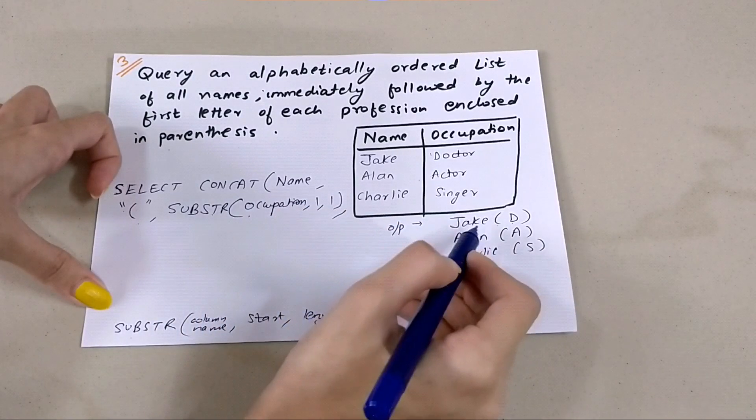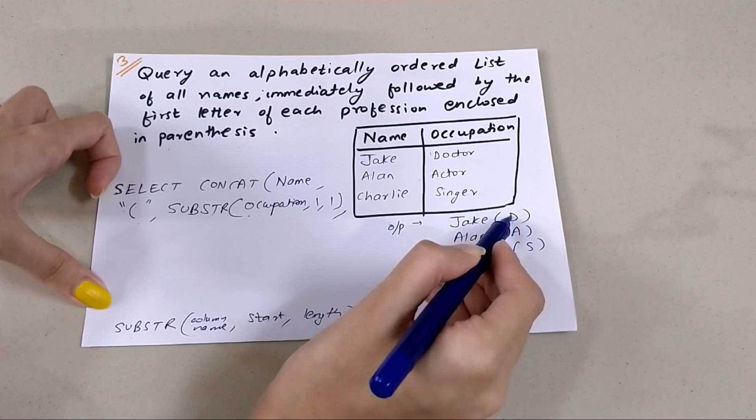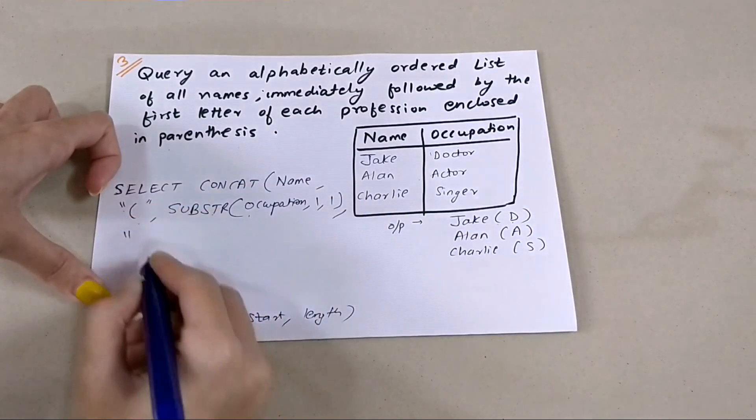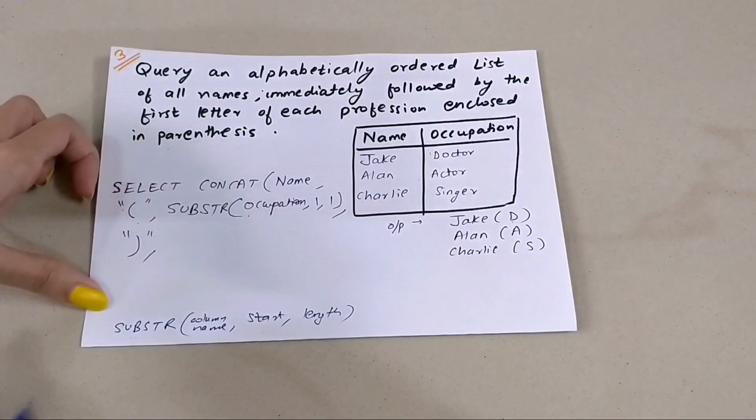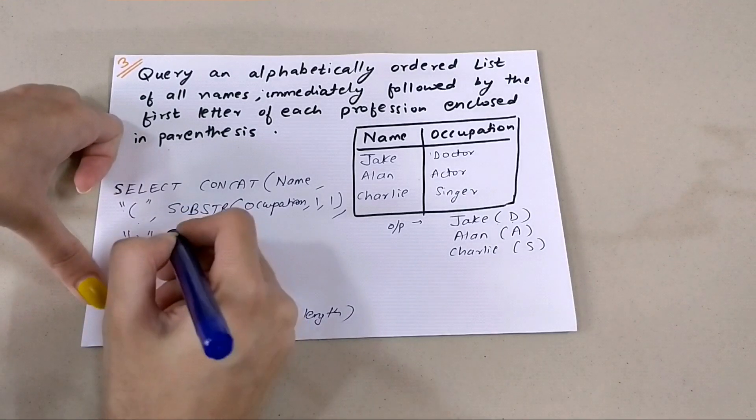Now we have printed the name, the left parenthesis, and the first letter. What is left is the right parenthesis. Again we're going to use quotes, and the right parenthesis will be printed. Then we're going to close this.